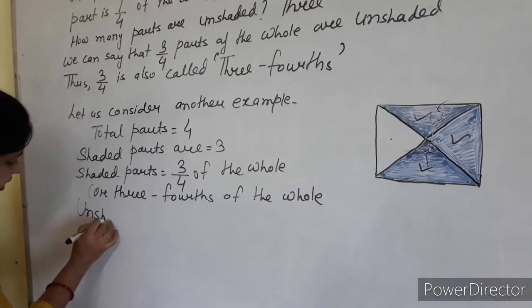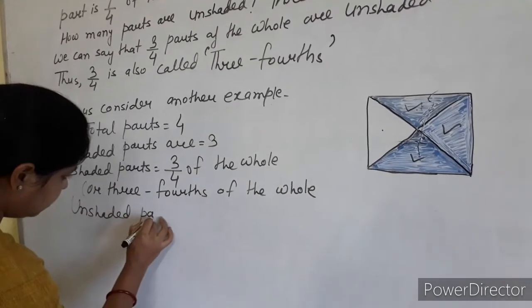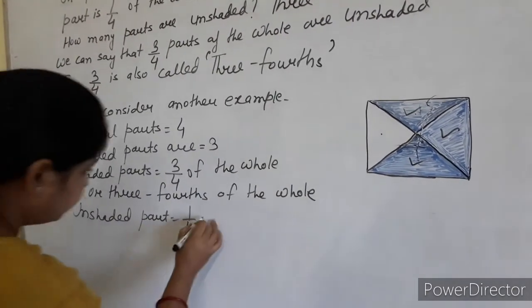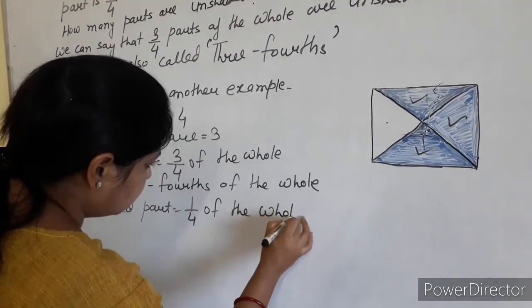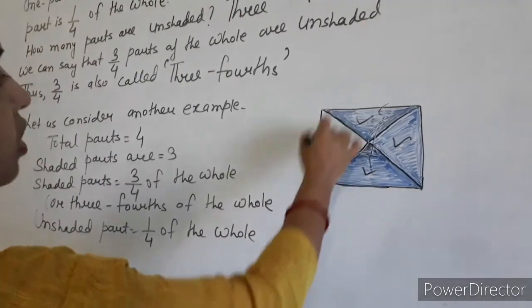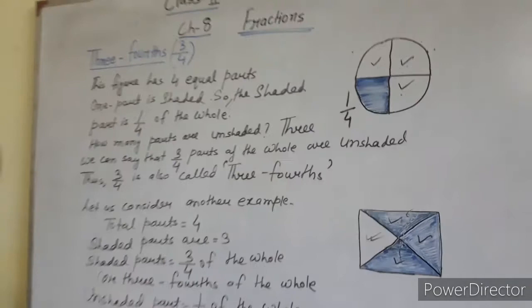How many unshaded parts? Unshaded part equal to 1 by 4th of the whole. And the unshaded part, this one is unshaded part. It is the 1 by 4th of the whole. So, hope all of you understood.